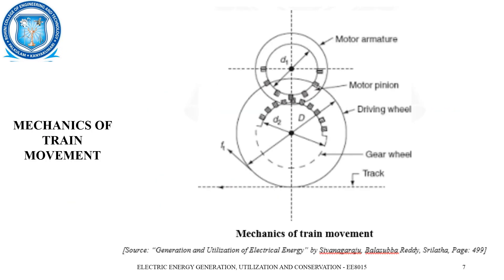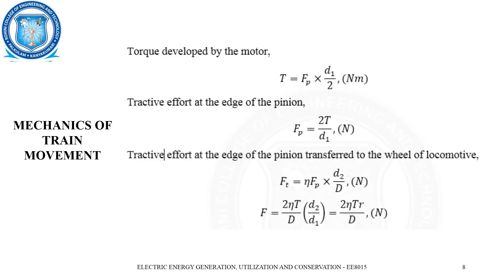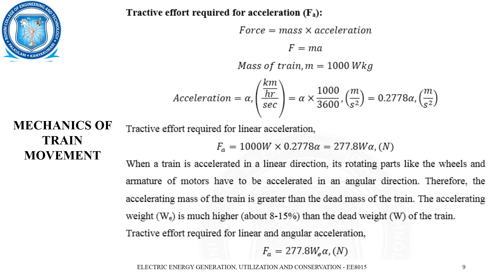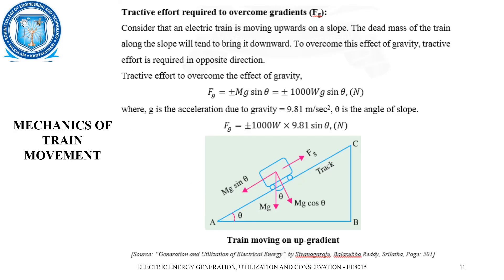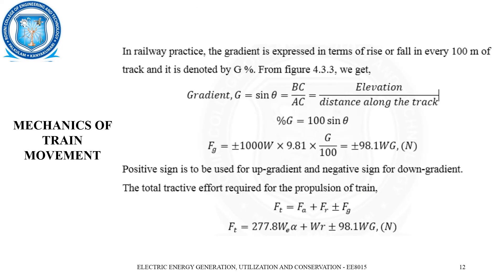Here, B/2 is the diameter of the motor, and we can find out Fp. From the geometry, sine theta equals BC divided by the hypotenuse AC, where BC is the elevation and AC is the distance along the track. So the gradient force Fg is 100 times sine theta. What we need to find is the total tractive effort required for the propulsion of the train, considering the values Fa (tractive effort for acceleration), Fr (tractive effort against resistance), and Fg (tractive effort against gravity). Substituting these values, we obtain the total tractive effort.